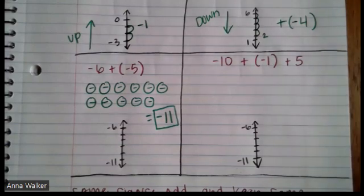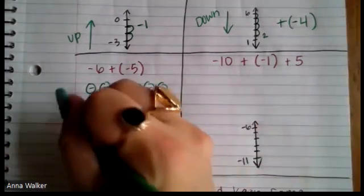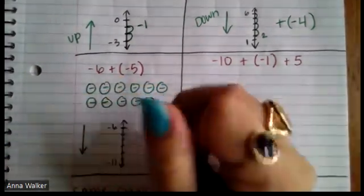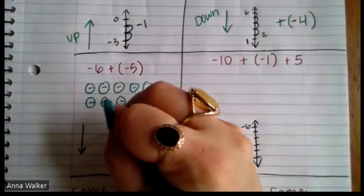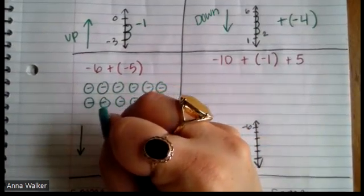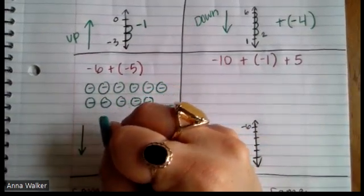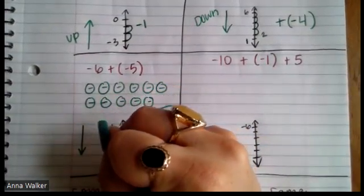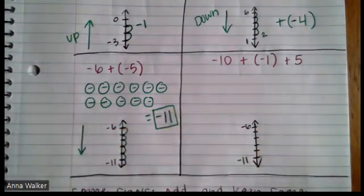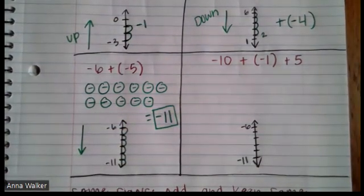When we add a negative, we go down our number line. So we go down five spots from negative six: one, two, three, four, five, six — and we end up at negative eleven.